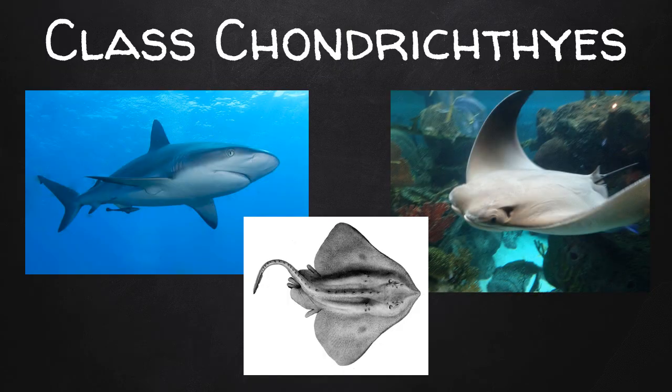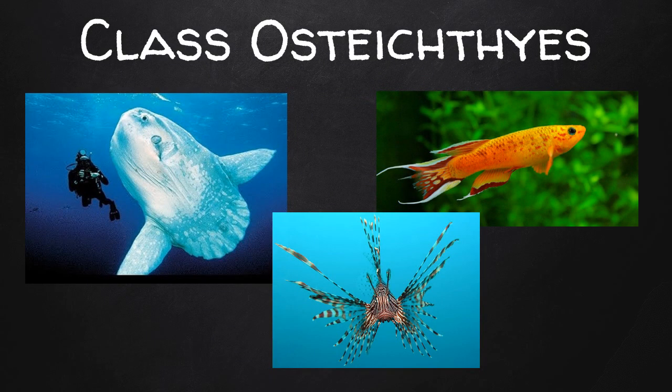Class Chondrichthyes is made of fishes with skeletons made of cartilage. These include sharks and rays. Class Osteichthyes includes fish with skeletons made of bone.